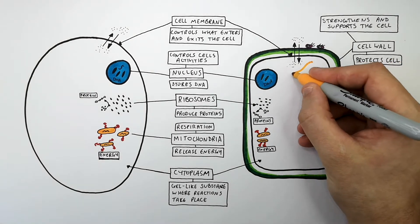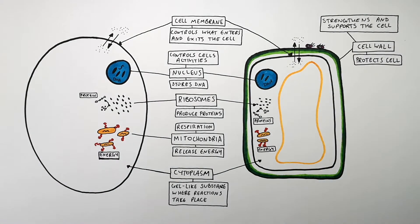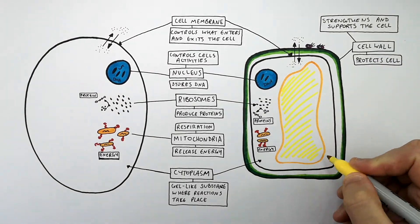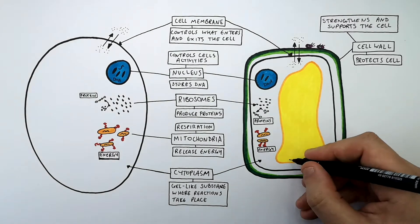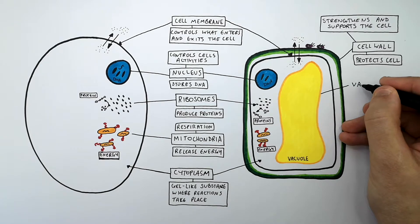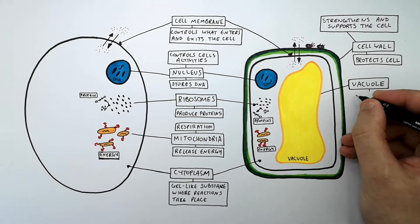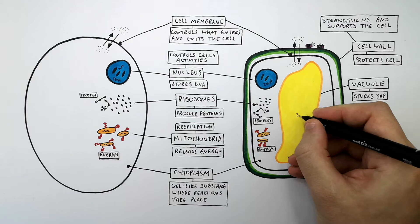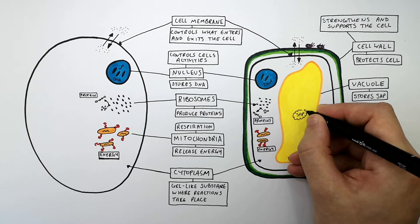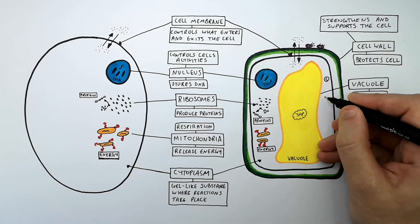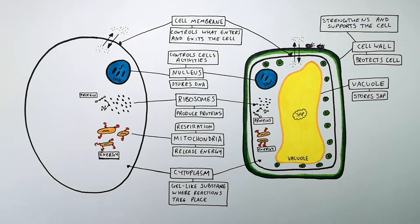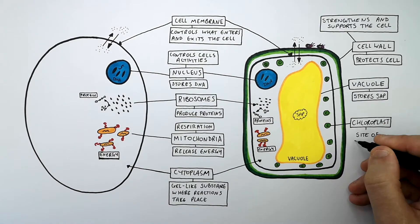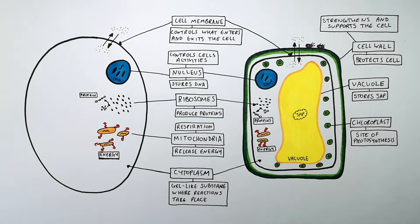Plant cells have a permanent vacuole, which stores sap. The yellow represents the sap that is stored in the permanent vacuole. What I'm drawing now are the chloroplasts in a plant cell. The chloroplasts are the site of photosynthesis in a plant cell.